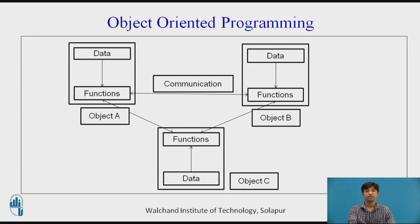Object-oriented programming allows decomposition of a problem into a number of entities called objects, and then builds data and functions around these objects. We can define object-oriented programming as an approach that provides a way of modularizing programs by creating partitioned memory areas for both data and functions, used as templates for creating copies of such modules on demand. An object is a partitioned area of computer memory that stores data and a set of operations that can access that data.